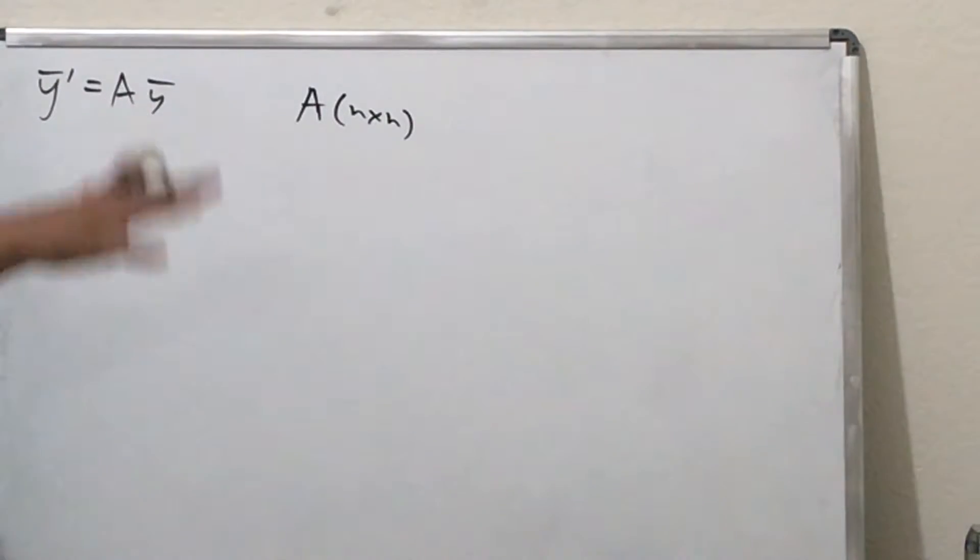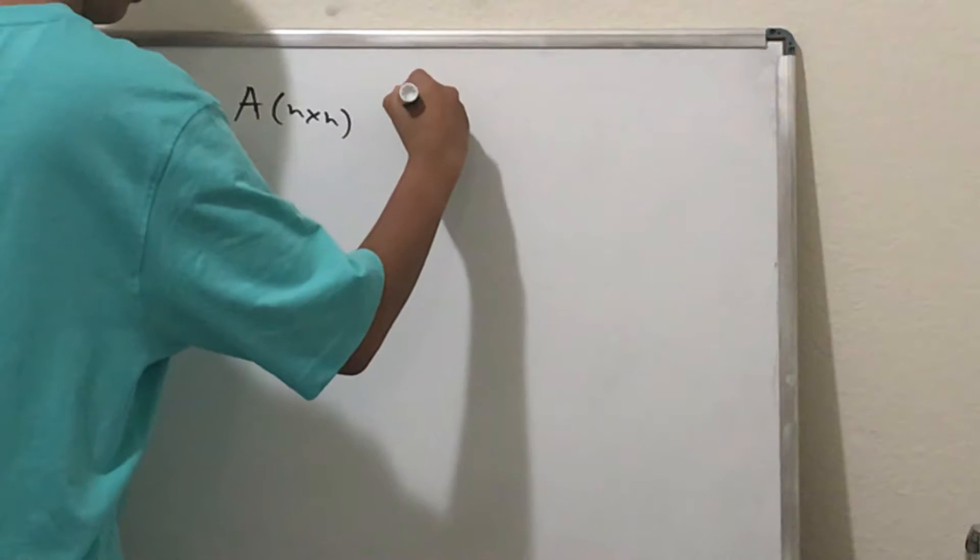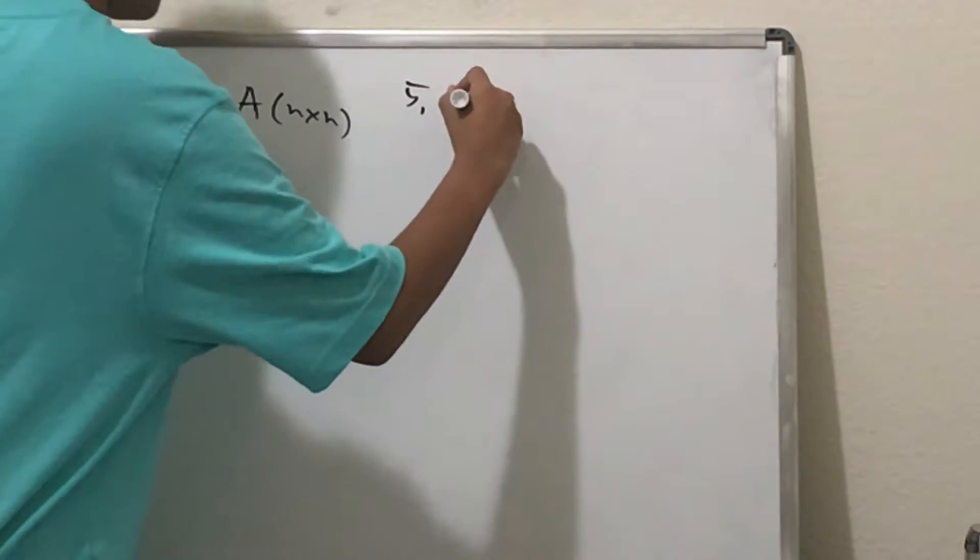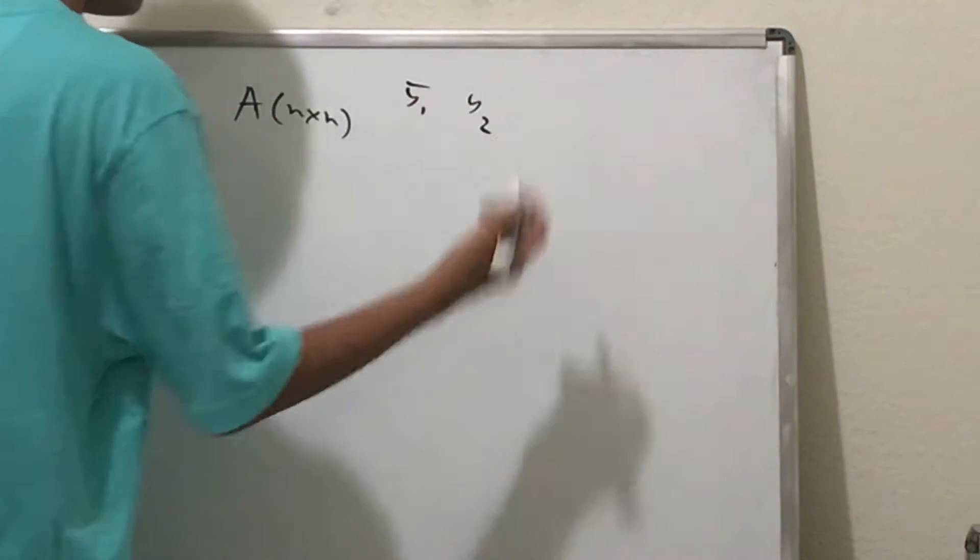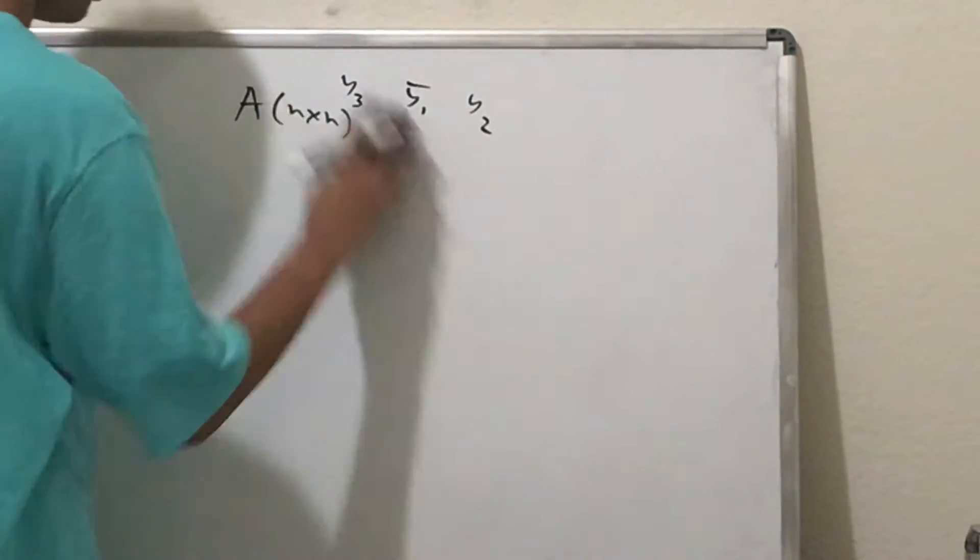So A is going to be an n by n matrix. And linearity implies that if you have one solution, let's just call it y1, and if you have another solution y2, then you can generate another solution y3 like this.